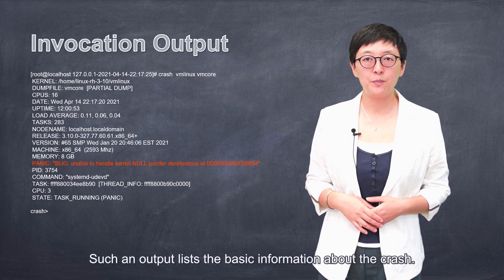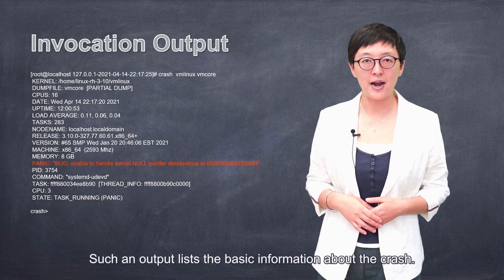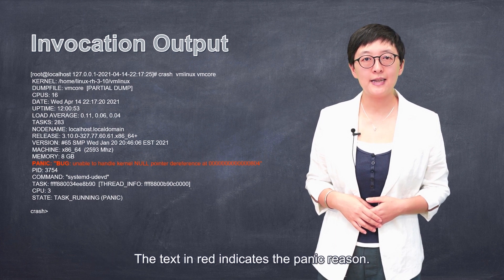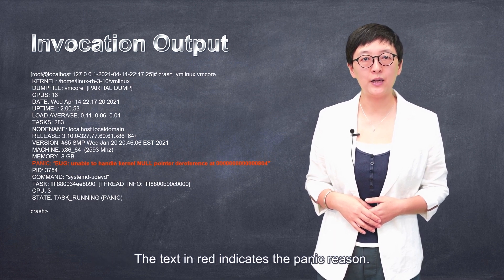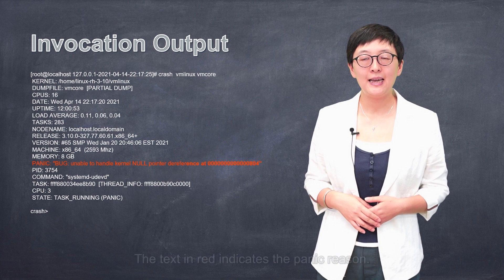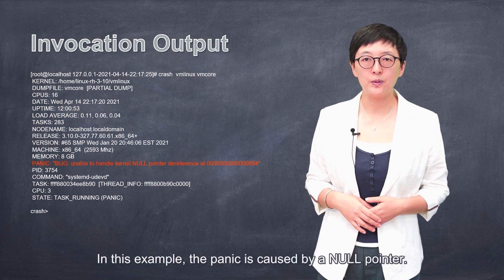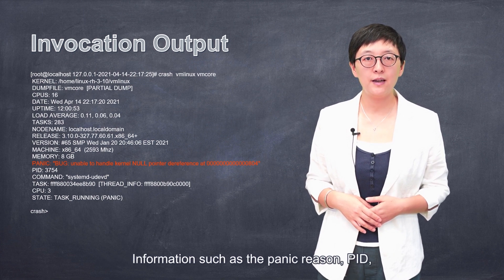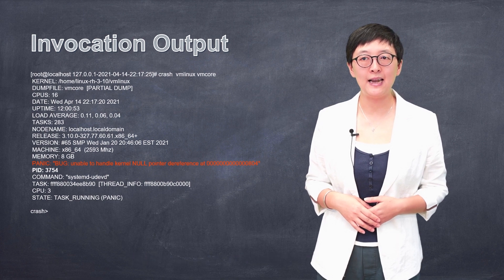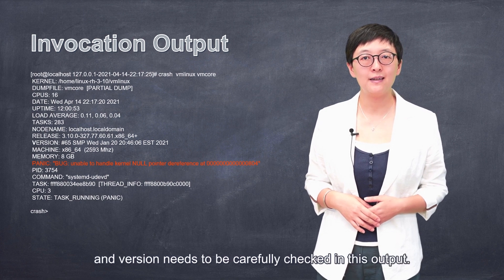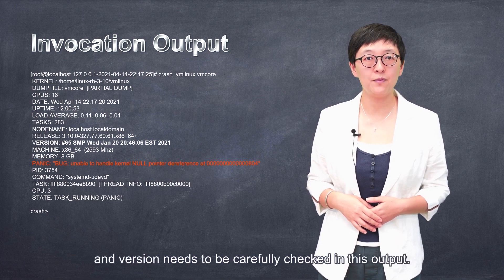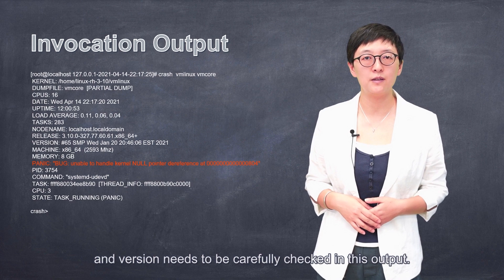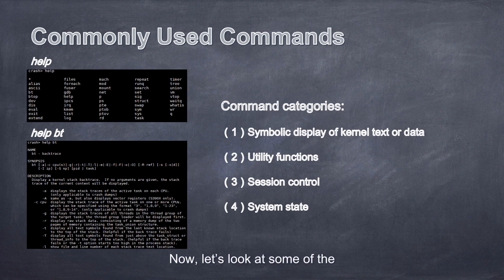This is a typical invocation output, given that all invocation arguments are in order. Such an output lists the basic information about the crash. The text in red indicates the panic reason. In this example, the panic is caused by a null pointer. Information such as the panic reason, PID, and version needs to be carefully checked in this output.